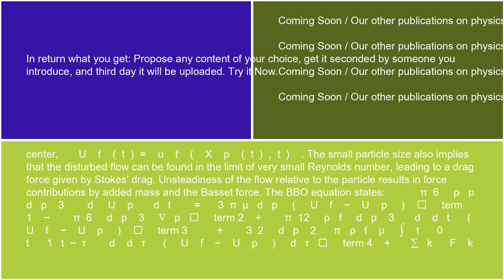π/6 ρ_p d_p³ du_p/dt = 3πμd_p(u_f - u_p) [Term 1] - π/6 d_p³ ∇p [Term 2] + π/12 ρ_f d_p³ d/dt(u_f - u_p) [Term 3]